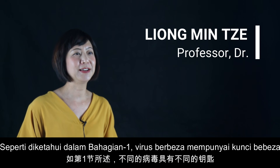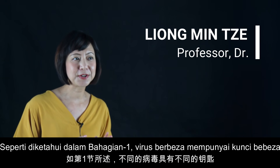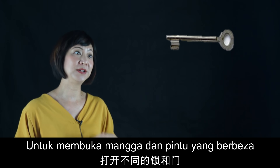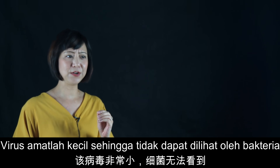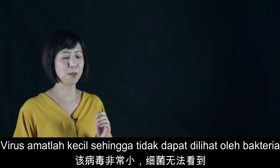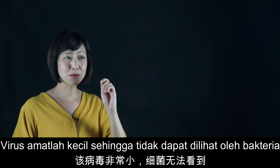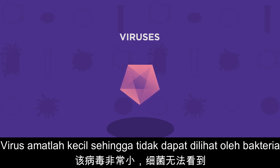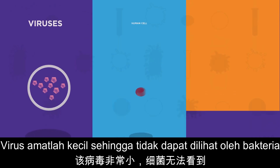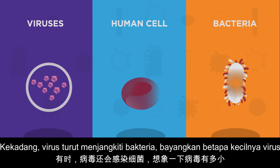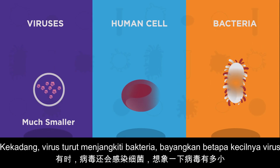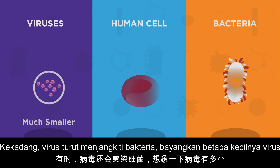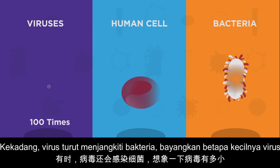As discussed in part one, we learned that different viruses have different keys that can open different locks and different doors. Viruses are very small — so how small are they? They are so small that even bacteria cannot see them, and sometimes viruses also infect bacteria. So can you imagine how tiny they are?